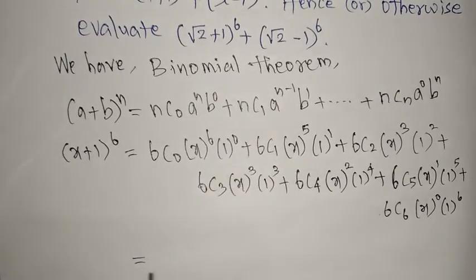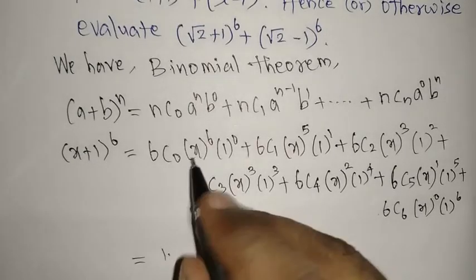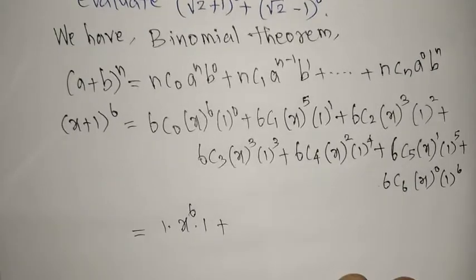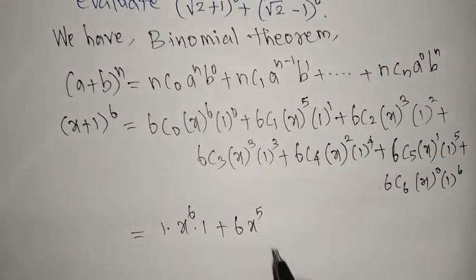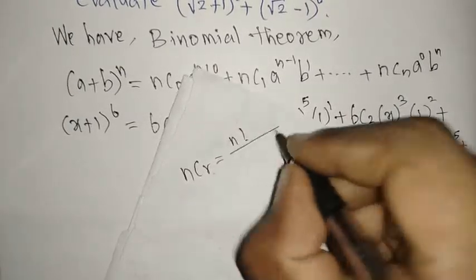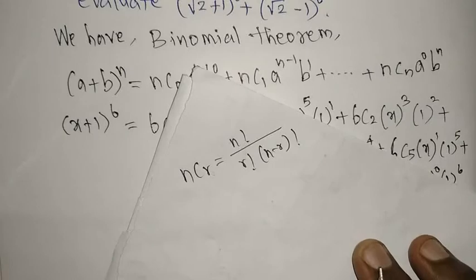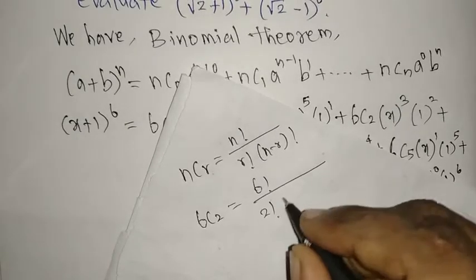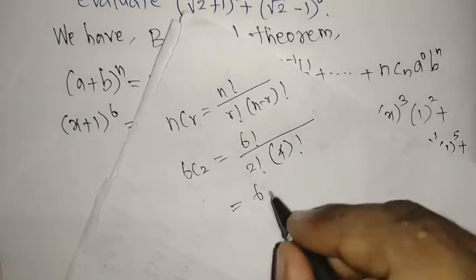6C0 is 1, so we get 1 · x⁶. 6C1 is directly 6, so we get 6x⁵. For 6C2, we use the formula nCr = n! / (r! · (n−r)!). So 6C2 = 6! / (2! · 4!).